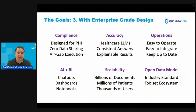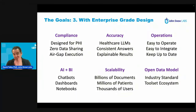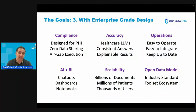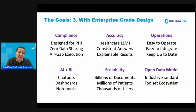We want to use an open data model — we don't want to load all the data into some proprietary system so that you can only query our database. On the contrary, we want to use an industry standard format. We map everything to the OMOP data model, which is a relational database data model and industry standard. We want this to scale to at least millions of patients — if not tens of millions — which means many billions of documents and inputs potentially.